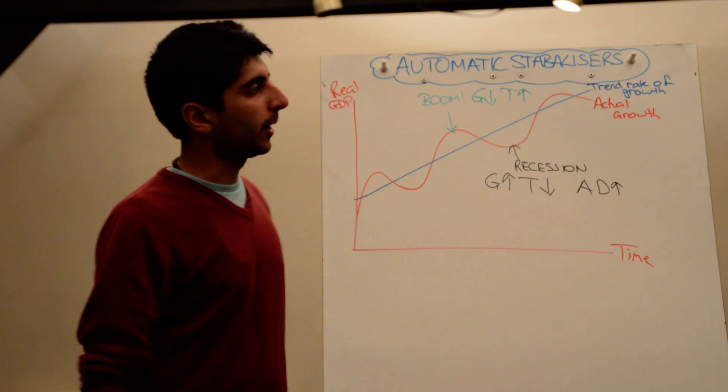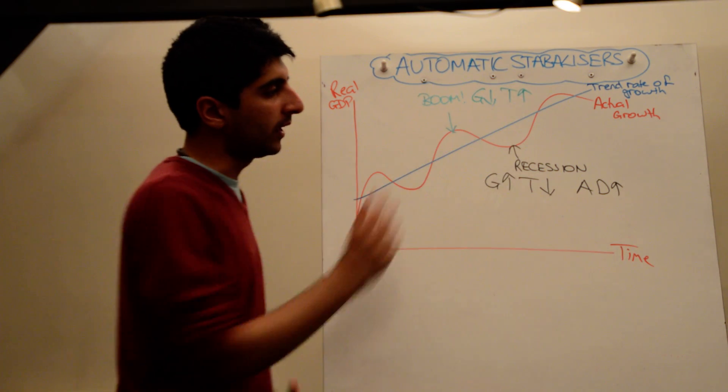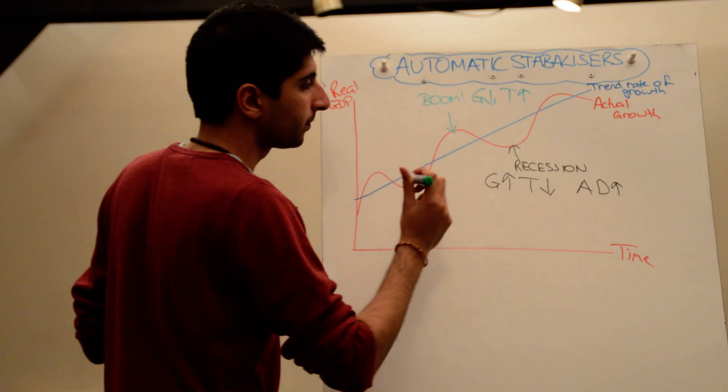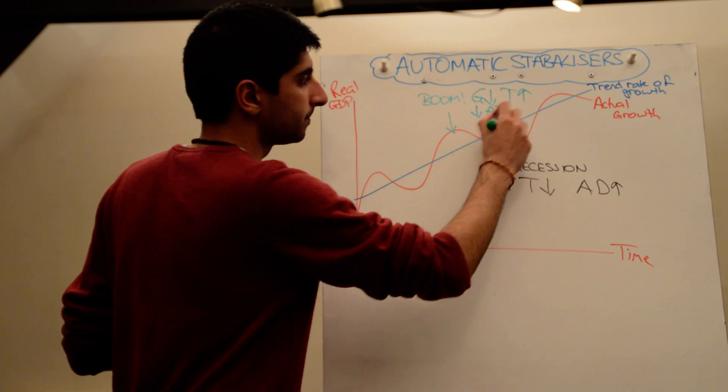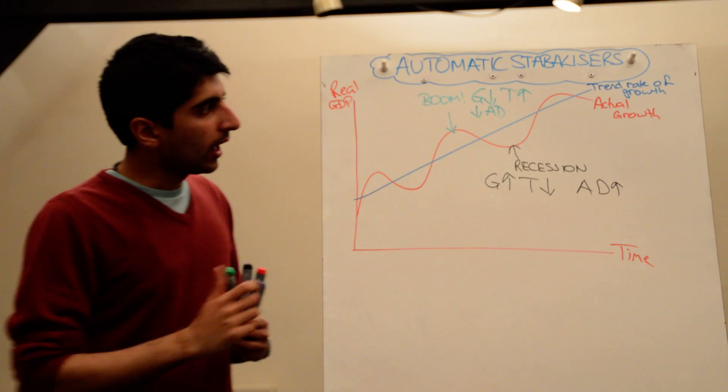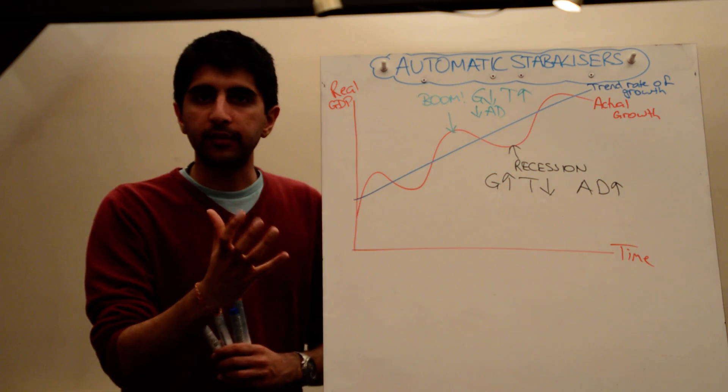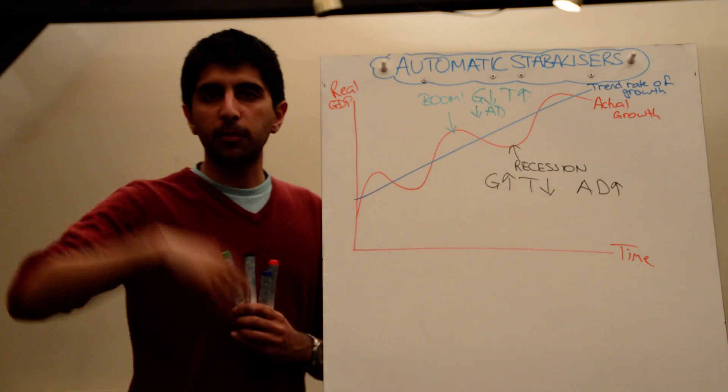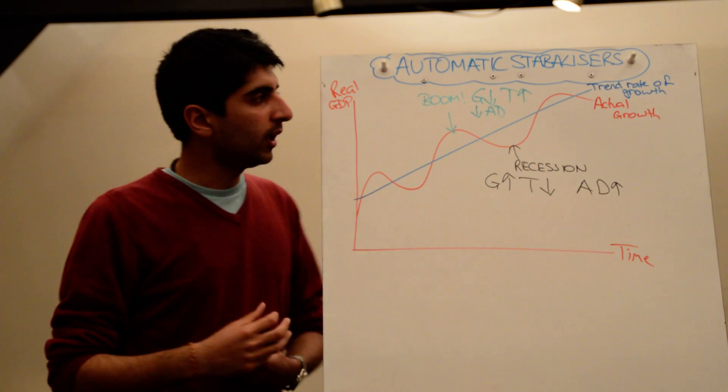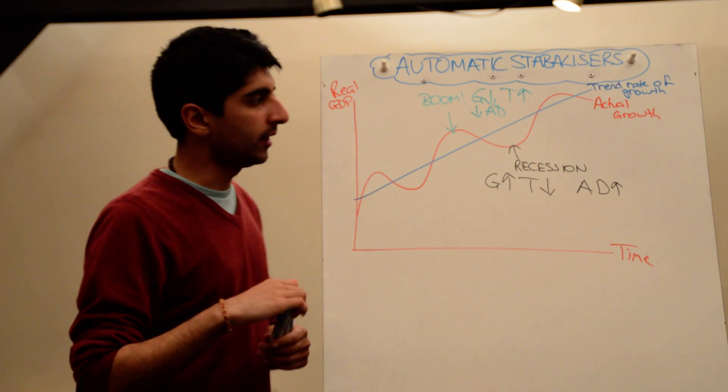So these two things are therefore going to reduce aggregate demand and automatically stabilize the economy and prevent the economy from growing too quickly in a boom period. So the point of automatic stabilizers is they reduce the overall fluctuations in the business cycle.